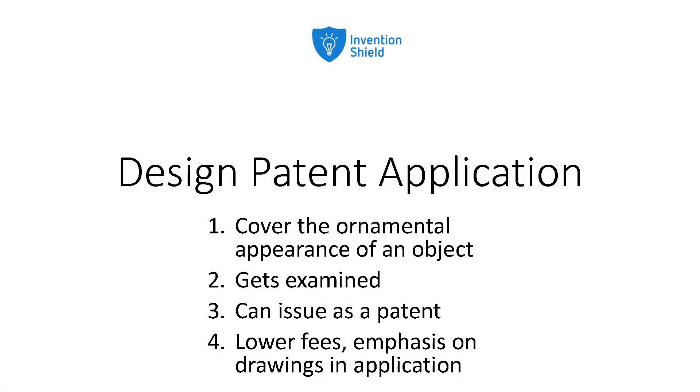The design patent application is one that covers the ornamental appearance of an object — it covers just the appearance of your invention. For some inventions this is important. For example, if you're inventing a new type of silverware pattern, you're not inventing the fork, spoon, or knife, but your handle pattern is something you may want to protect, and a design patent application could help you do that. For most people it would be the utility application covering products, software, and that kind of thing.